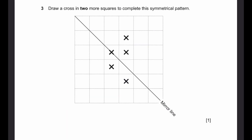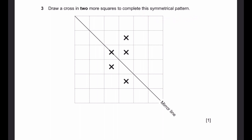Let's go to question 3. Draw a cross in two more squares to complete this symmetrical pattern. The mirror line is going to be the diagonal line drawn here. Now let's see which crosses already have their mirror images set — only then there could be a symmetrical pattern. So this cross is placed on the line, which means it does not need another cross to be its mirror image. When you flip it over the mirror line, it's just the same cross.